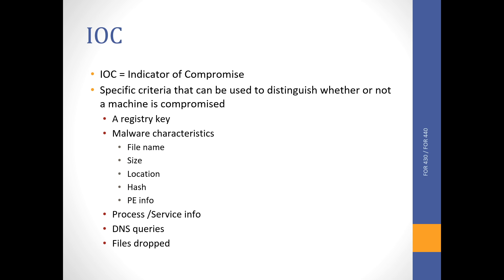It could be malware characteristics very specific to a malware sample, like its file name, size, location, its hash, or other portable executable information. It could also be a process or service — the compromise can be identified when we find a specific process or service. It could be a DNS request or DNS query, or a file that has been dropped on the system.